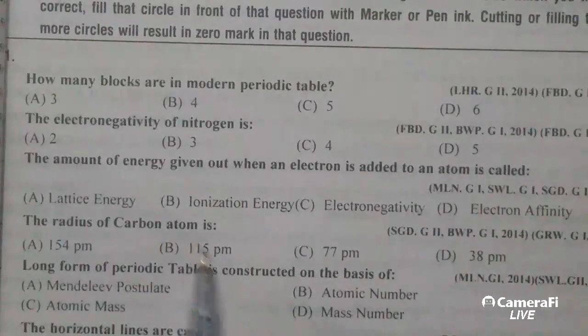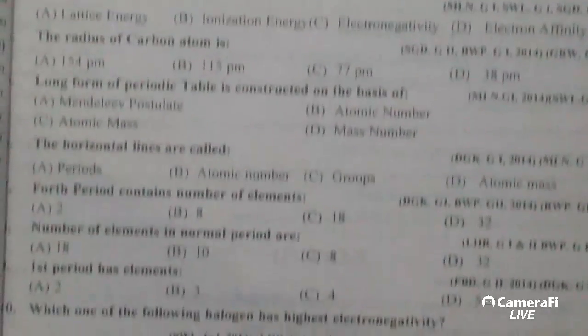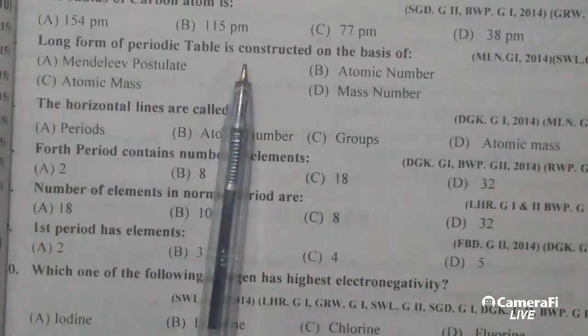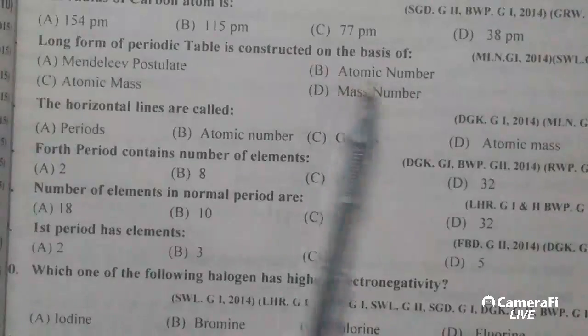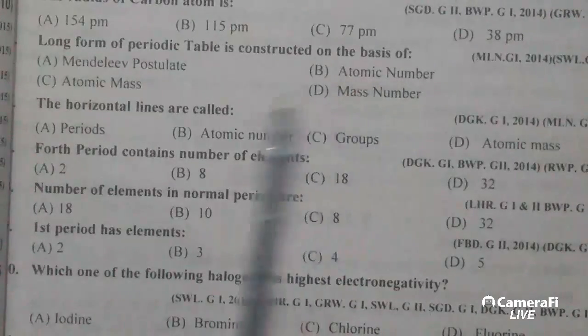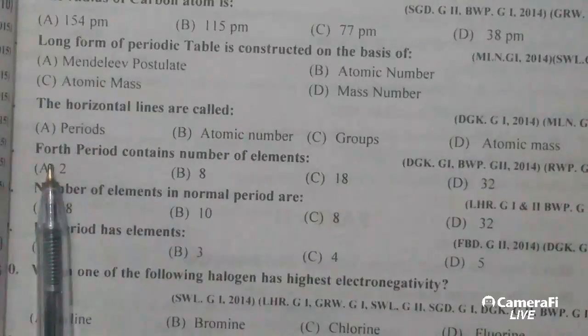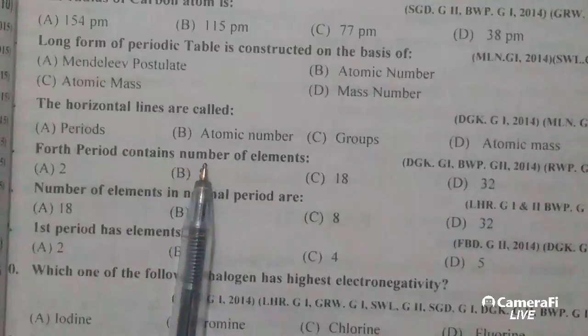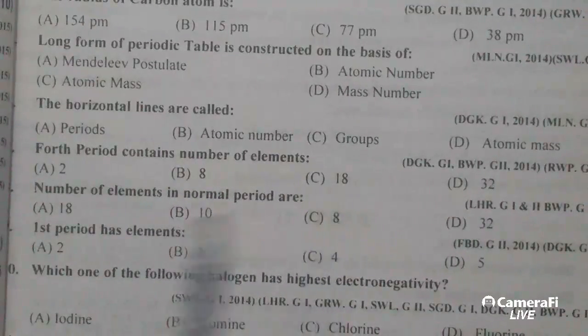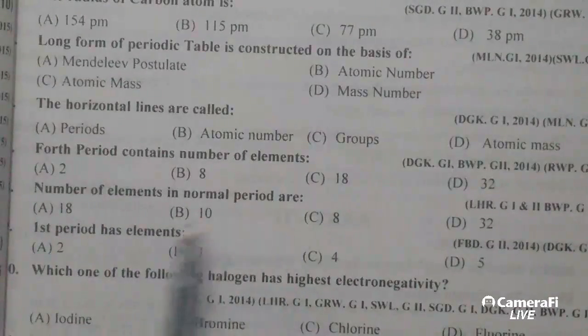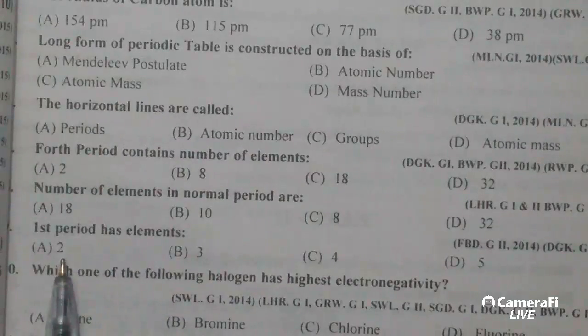The radius of carbon atom is 77 picometer. Long form of periodic table is constructed on the basis of atomic number. The horizontal lines are called periods. Fourth period can accommodate 18 elements. Number of elements in normal period are 8. First period has two elements.